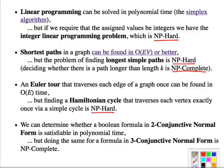And then logical formulas: 2-Conjunctive Normal Form is satisfiable in polynomial time, but 3-CNF is NP-complete. And we'll see—actually, we're going to see informal demonstrations of the 3-CNF and the Hamiltonian cycle in a little while.